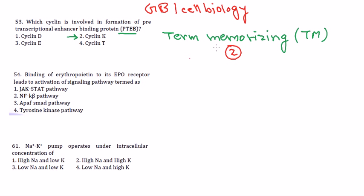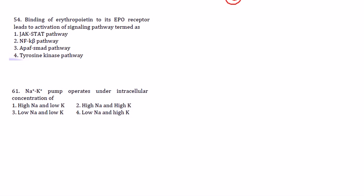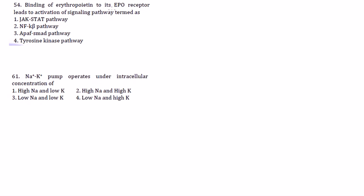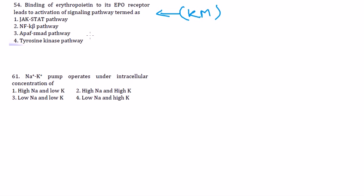Moving on to the second question: the binding of erythropoietin to its EPO receptor leads to activation of a signal pathway — which one? This question is slightly different; it will test your knowledge a little bit, so I categorize it as knowledge-memorizing, or KM type. You need to know which pathway is related to erythropoietin and the EPO receptor.